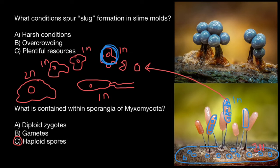The zygote would grow — it is not going to form any cell walls, but it stays a single cell. However, the number of nuclei would increase and the whole body would also increase in size. Sometimes slime molds can be as big as one square meter, but still they are a single-cell organism with multiple nuclei. We also call this stage the feeding plasmodium.